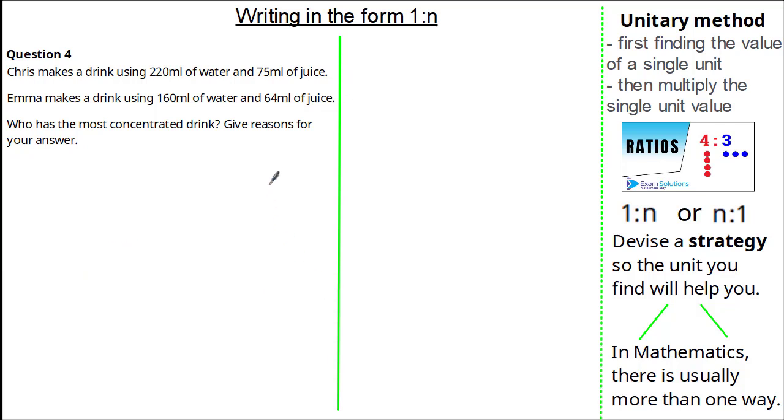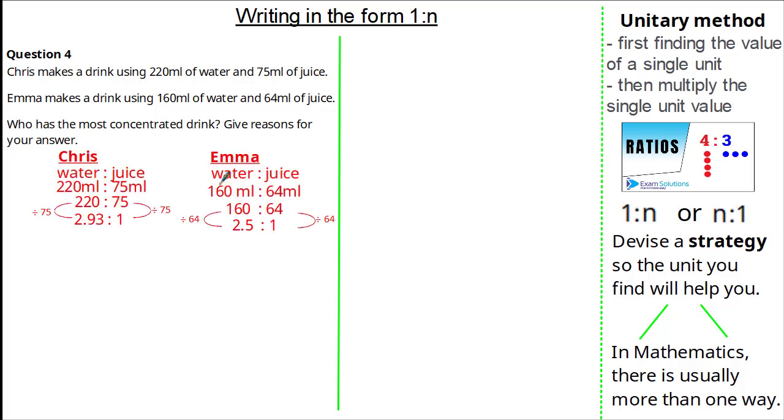You could have used an alternative strategy whereby you found one part juice as opposed to one part water. Here, the working out is the same, but I've made one part juice for Chris by dividing by 75 to both sides. Here, I've made one part juice for Emma by dividing both sides by 64. You can see, one part juice requires less water for Emma. So therefore, Emma has the most concentrated drink because for every one millilitre of juice, she has less water.